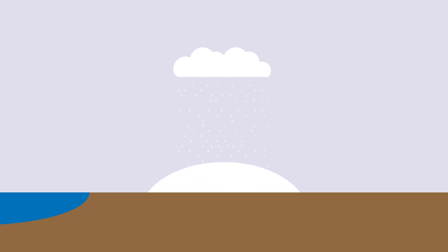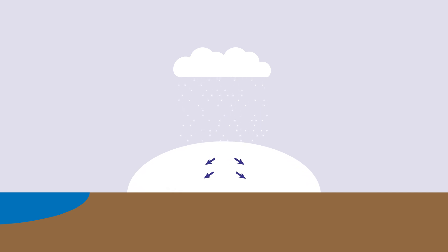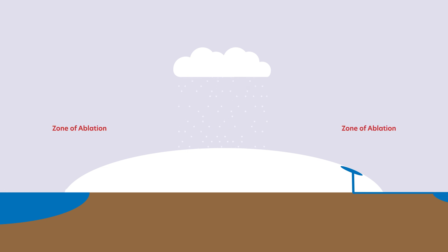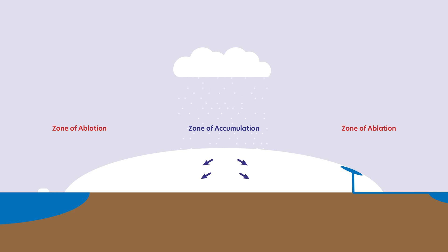Glaciers form where snow accumulates so thick that it compresses into ice. Although ice seems quite solid, glacial ice slowly deforms under its own weight, spreading out and flowing downhill like pancake batter. At the edges, warmer air temperatures or contact with seawater cause the ice to melt away or break off icebergs that float away as they melt. This is the zone of ablation, where ice loss outpaces ice growth, as opposed to the zone of accumulation, where snowfall accumulates faster than ice is lost. Glaciers constantly flow from the zone of accumulation into the zone of ablation.